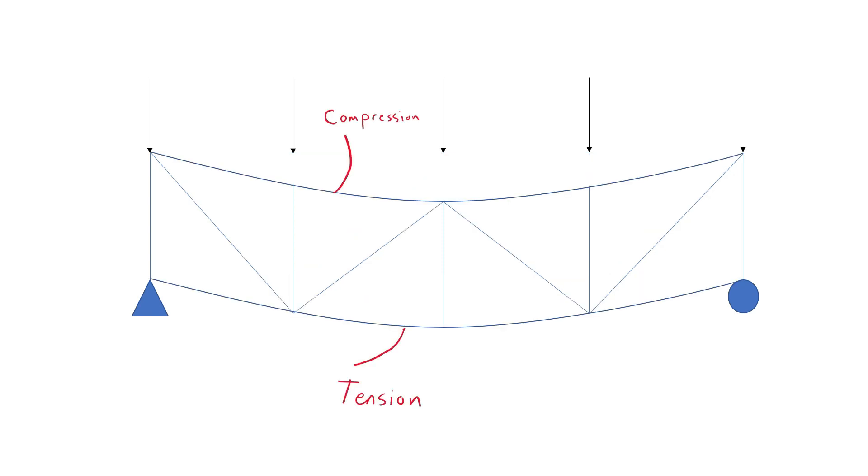For the usual truss geometry and loading, the bottom chord will be in tension and the top chord will be in compression. Some web members will be in tension and others will be in compression. When wind effects are included and consideration is given to different wind directions, the force in some web members may alternate between tension and compression. In this case, the affected member must be designed to function as both a tension member and a compression member.